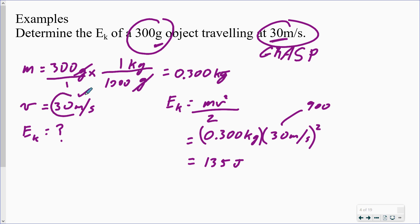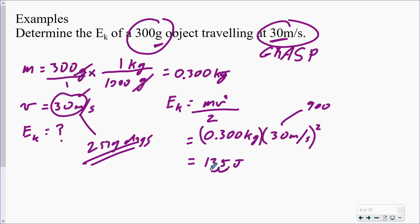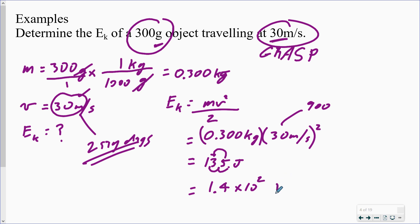But we want it to two significant digits, because 30 m/s has two sig digs. Our final answer needs to be rounded to two sig digs. So 135 joules — shifting the decimal gives us 1.35 × 10², and we round up the three to a four because the five is five or greater. So 1.4 times 10 to the two joules is our answer — two digits because our least precise given value has two significant digits.